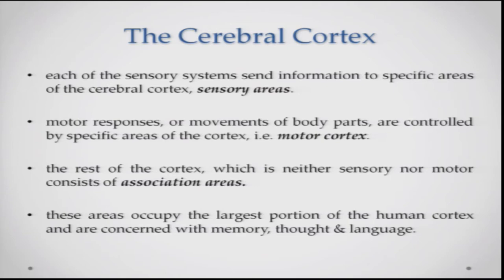The Cerebral Cortex can be said to have three specific kinds of areas. Each of the sensory systems — vision, audition, etc. — send information to specific areas in the cerebral cortex called the sensory areas. Motor responses or movements of body parts are controlled by other specific areas called the motor areas. The rest of the cortex, which is neither sensory nor motor, is a set of areas called the association areas.